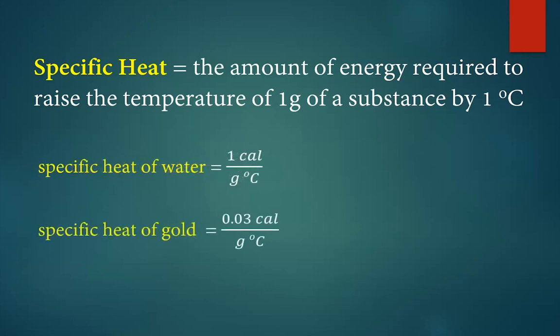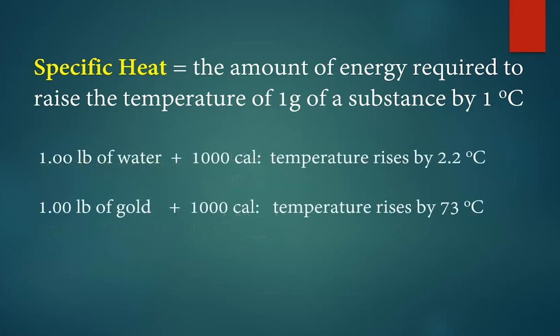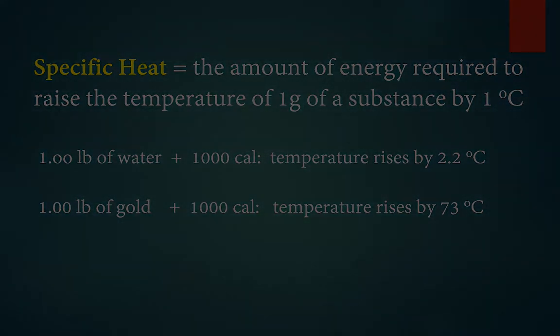The definition of specific heat is the amount of energy required to raise the temperature of one gram of a substance by one degree Celsius. The specific heat of water is simply one calorie per gram degree Celsius — it takes one calorie to heat one gram of water by one degree. Metals tend to have very low specific heats; for example, the specific heat of gold is only about three hundredths of a calorie per gram degree Celsius. So it takes very little energy to heat gold compared to water. If we took a pound of water and added 1,000 calories of energy, the temperature would only go up by a little over two degrees. If we took a pound of gold and added that same 1,000 calories, the temperature would rise by a little over 73 degrees — gold increases in temperature about 30 times faster than water.